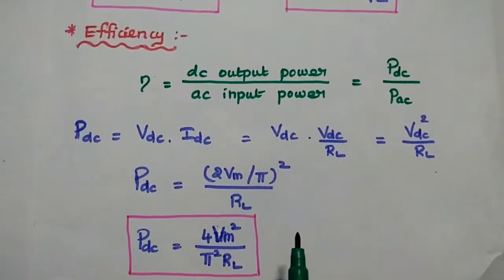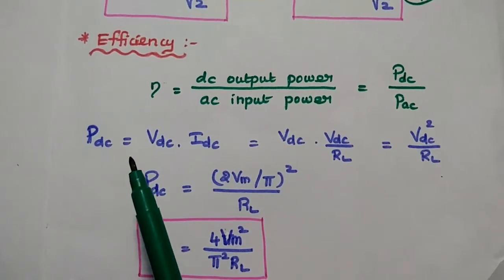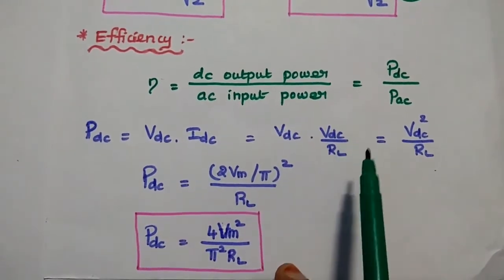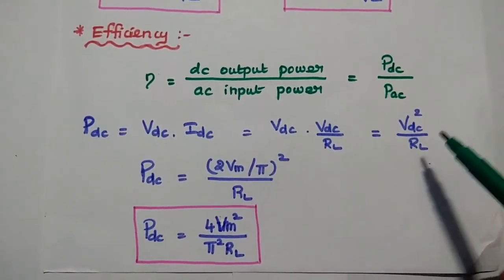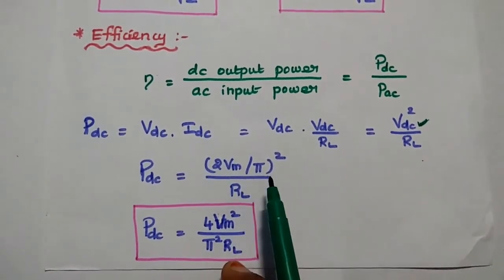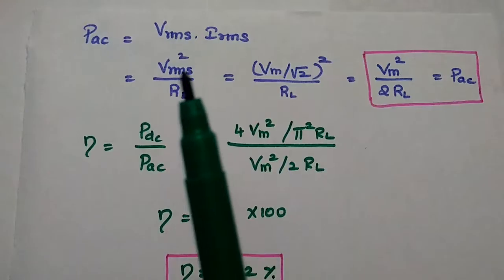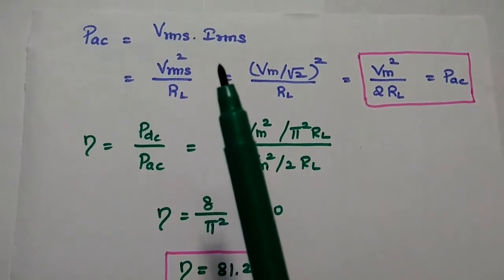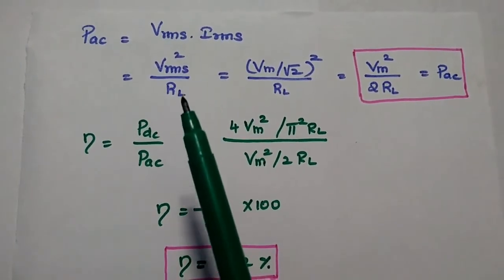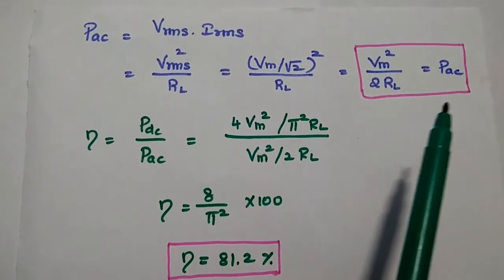Next we find the efficiency, defined as the ratio of DC output power to AC input power. DC output power = Vdc × Idc = Vdc²/RL. Substituting Vdc = 2Vm/π, we get DC output power = 4Vm²/(π²RL). Similarly, AC input power = Vrms × Irms = Vrms²/RL. With Vrms = Vm/√2, we get AC input power = Vm²/(2RL).